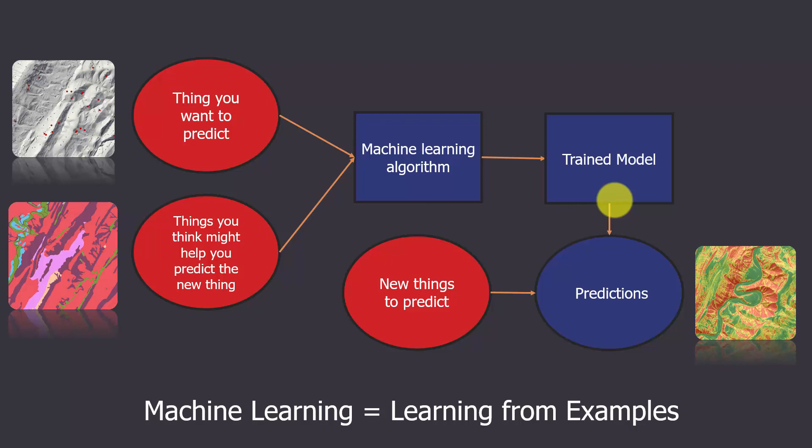So again, the inputs are basically going to be sample locations, or training samples, predictor variables that are going to help us understand this thing that we're trying to predict. Those will be used to create a model, or sorry, will be fed into an algorithm, which will then create a model, which we can then apply to new data.